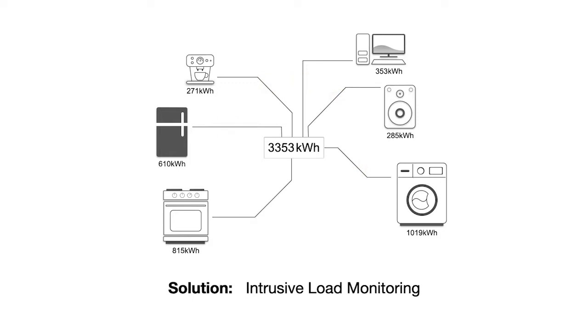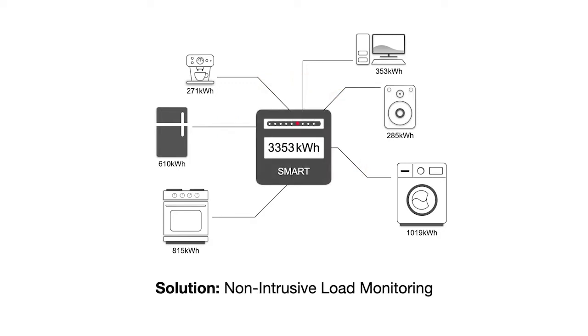The second method is called non-intrusive load monitoring. This requires only a single electricity meter installed at the central position in the home's electric network. This device might also be an existing smart meter already installed in the fuse box. The aggregated data of this meter is then analyzed and the individual consumption of the appliance is disaggregated using some advanced algorithms.